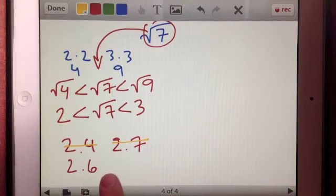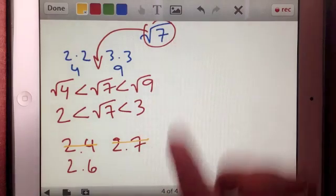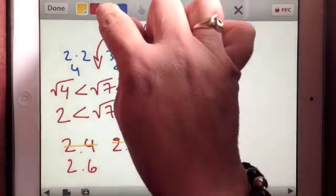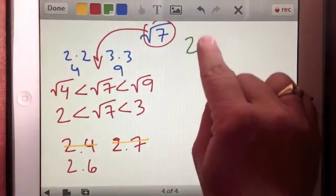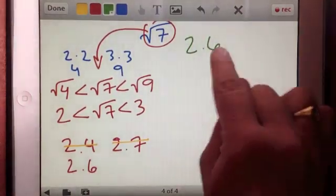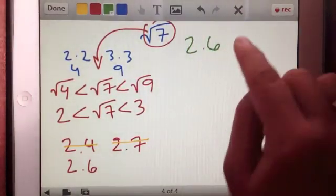But I would like to go to the hundredths place, and let's see if we can find the digit that gets us closest to the value of 7. So let's do that in a different color. So if we have 2.6, what number should we put in the hundredths place? And let's just try 5.